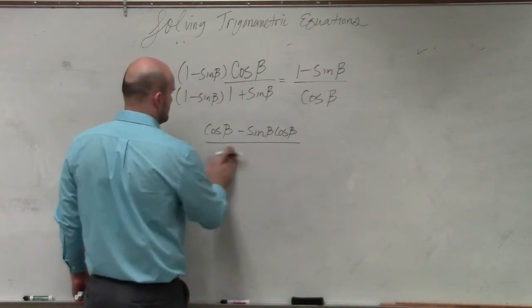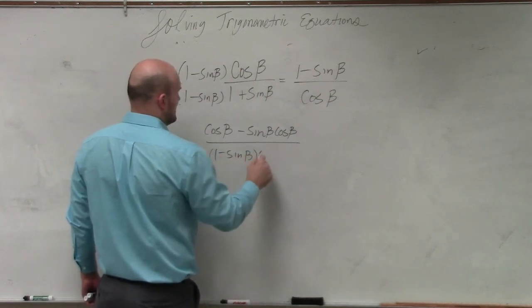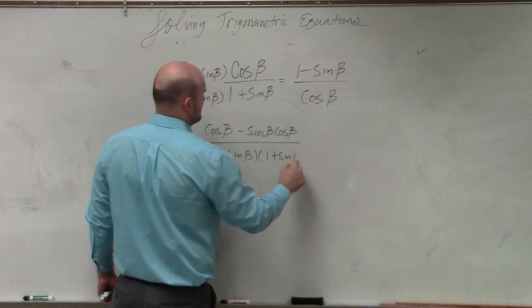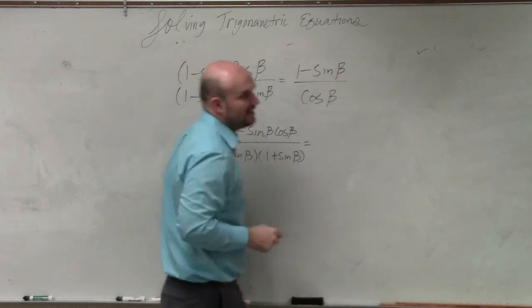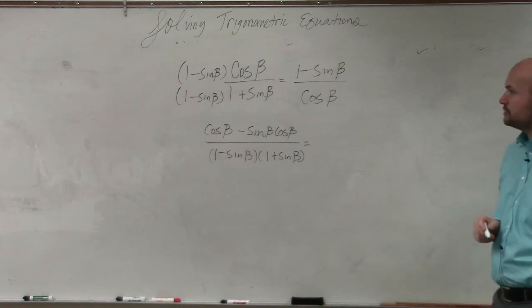Let's do 1 minus sine of beta times 1 plus sine of beta. I'm not going to multiply it out yet, because I just want to kind of see what kind of occurs here. And I see what happens. I see what I'm going to want to do.